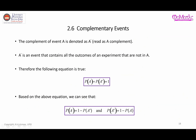Now let's move on to complementary events. The complement of event A is denoted as A prime, or sometimes A-bar. A prime is the event that contains all the outcomes of an experiment that are not in A. Therefore, P(A) plus P(A prime) equals one.